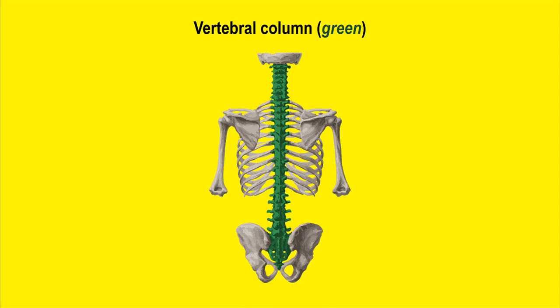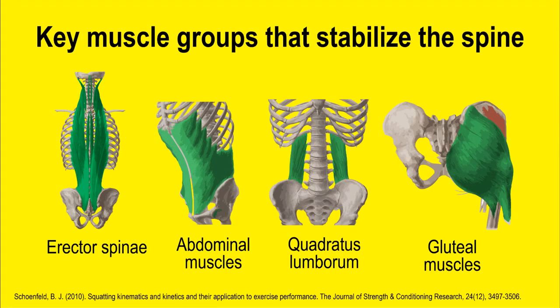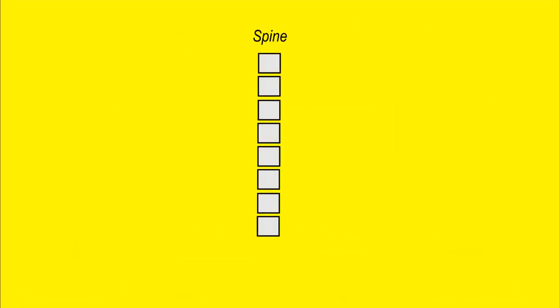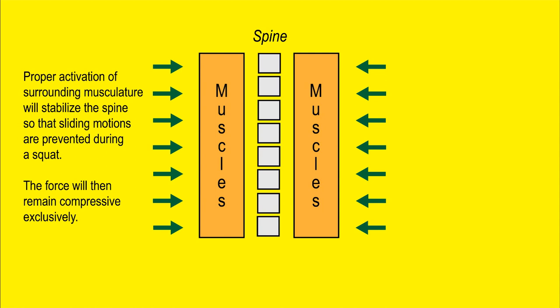The vertebral column is surrounded by several key muscles: the erector spinae, the abdominal muscles, the quadratus lumborum, and the gluteal muscles. The glutes actually play a very large role in stabilization of the spine as well — this is not always obvious. Collectively their purpose in the squat is to provide stability, because the spine is fragile — just those vertebra with discs in between. We need to engage all of those muscles so they isolate the spine, allowing us to lift heavy weights collectively with all structures.